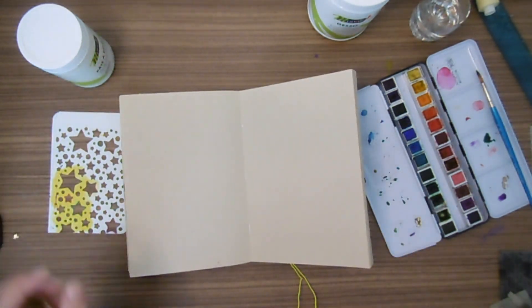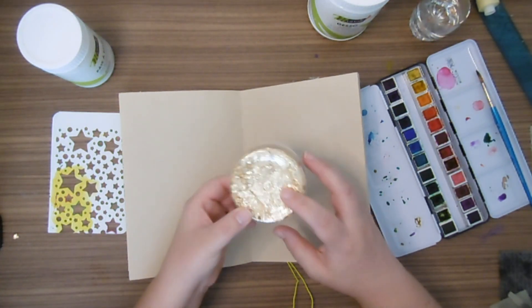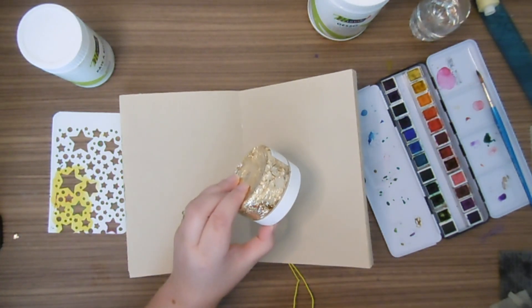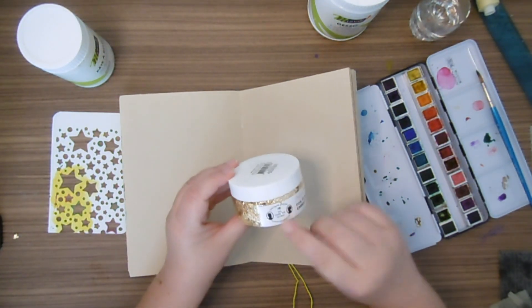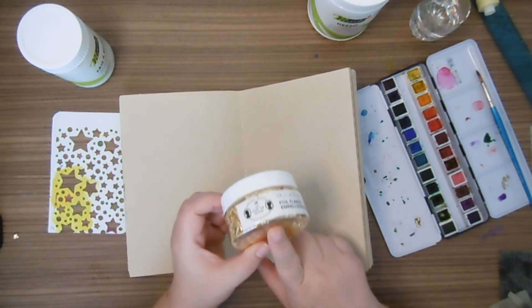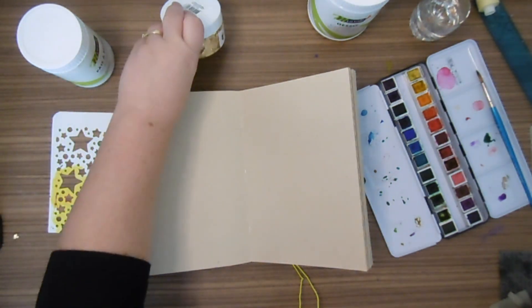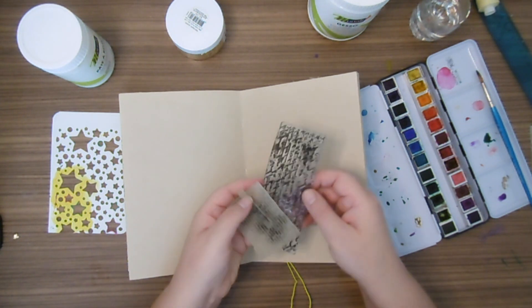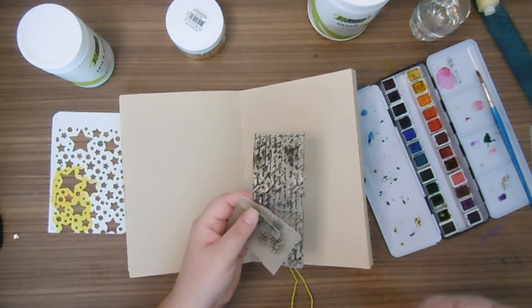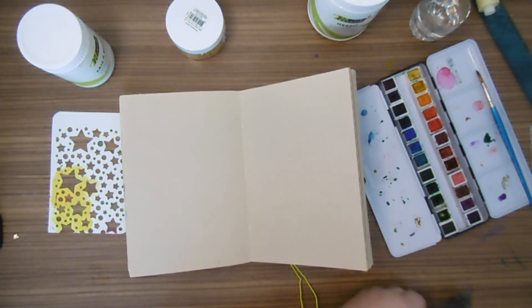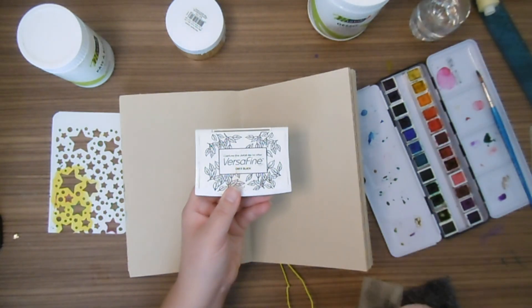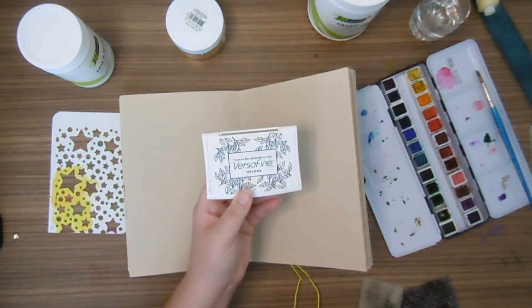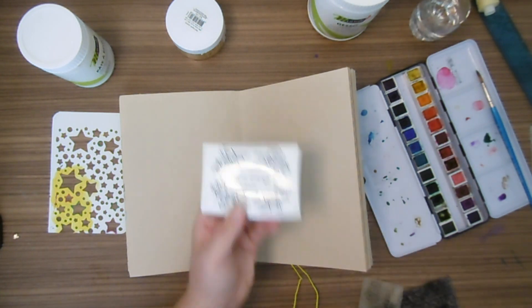Je vais utiliser aussi des feuilles d'or comme ceux-là qui sont de sauce traîne grainée. Et des tampons, je vais utiliser des tampons lettres pour mettre de la profondeur à la page avec de l'encre.